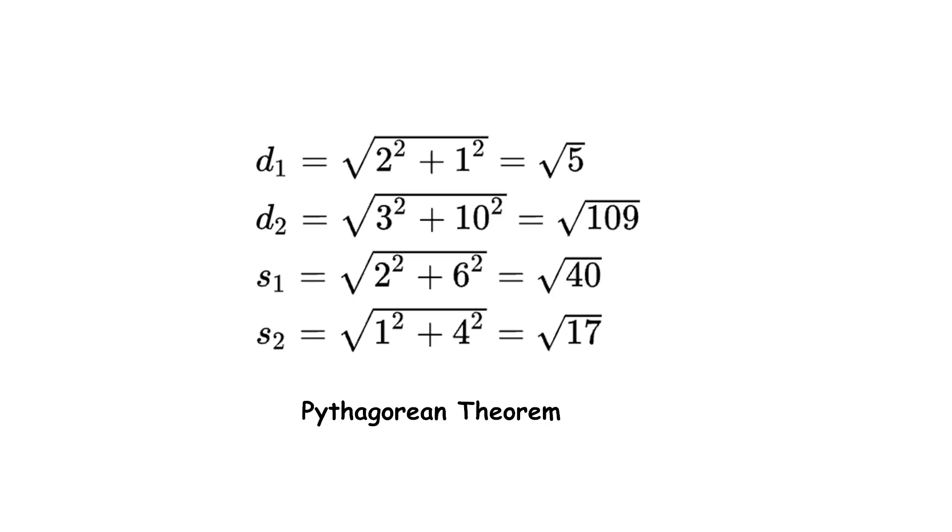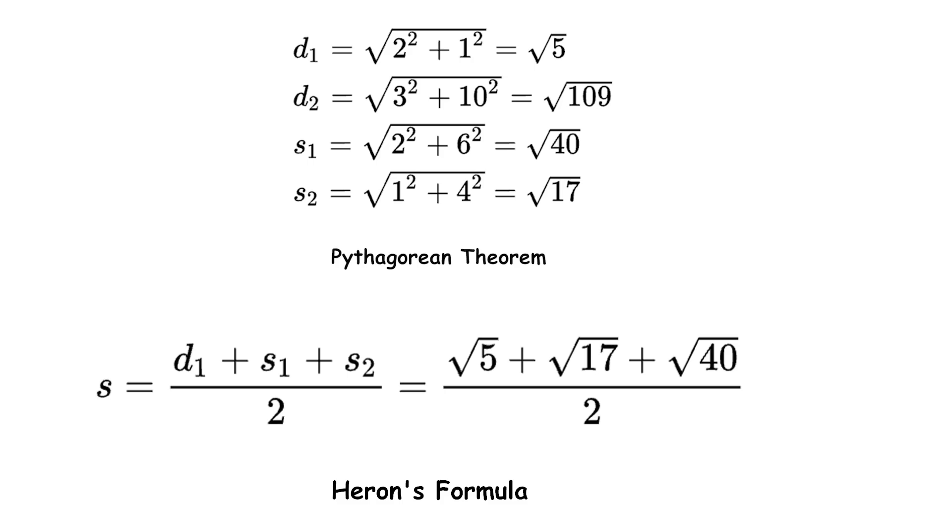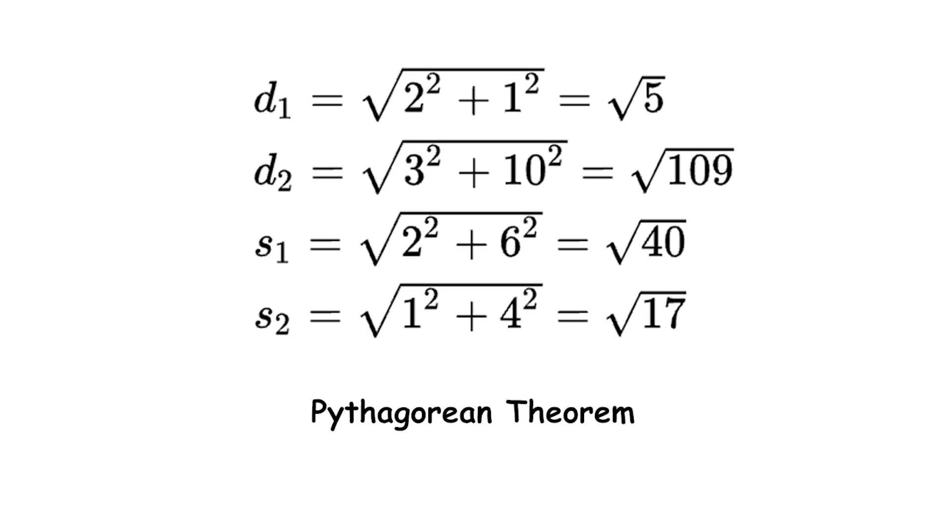To find out exactly how much area is overlapping, you can use mathematical formulas. Specifically, you can use the Pythagorean theorem and Heron's formula. The Pythagorean theorem is to find the lengths of the sides and diagonals of the overlapping parallelogram.